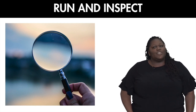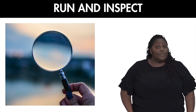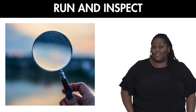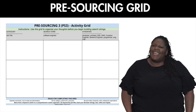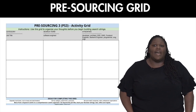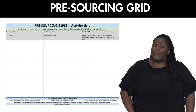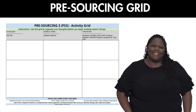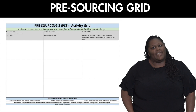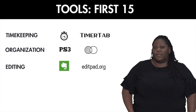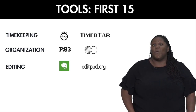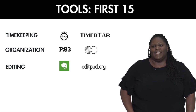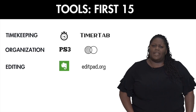Glen's First 15 strategy is easy to integrate into both your new and existing searches. And if you want to supercharge the First 15, why not pair it with a worksheet I created called the PS3 — a simple 3x3 grid that will help you organize your thoughts before you build your Boolean strings. Some tools that can support this strategy include timekeeping tools, organization and editing tools, and Glen's Automatic Boolean String Builder.